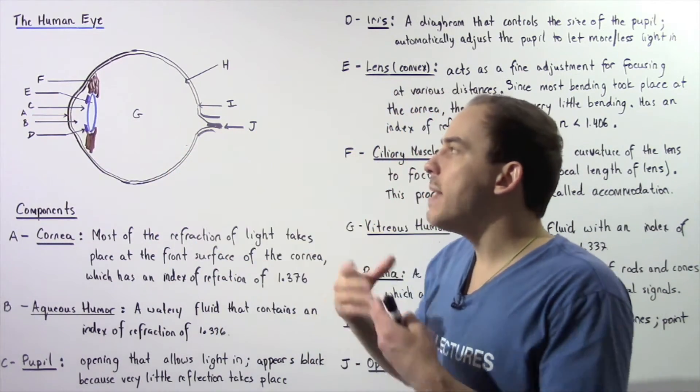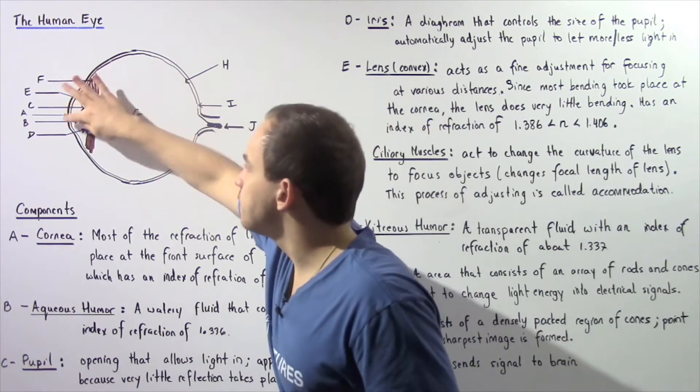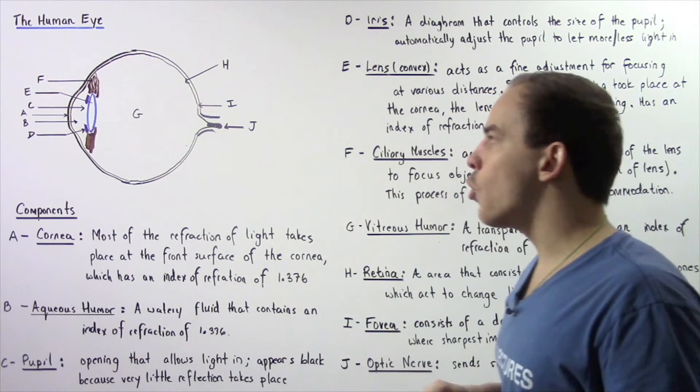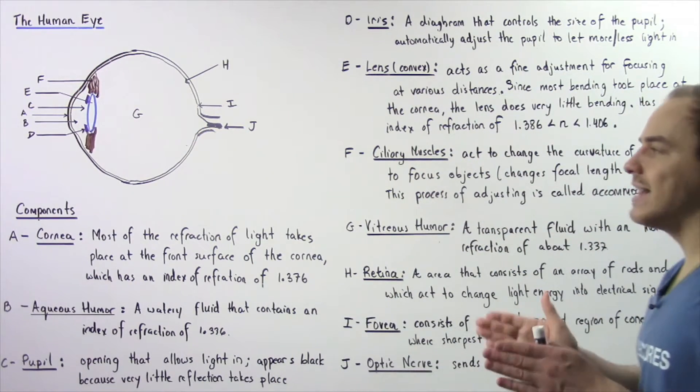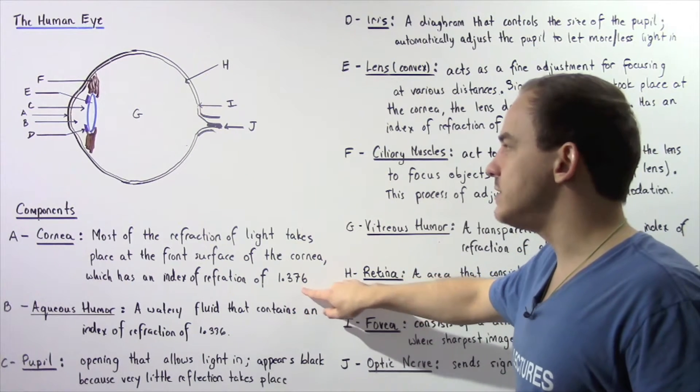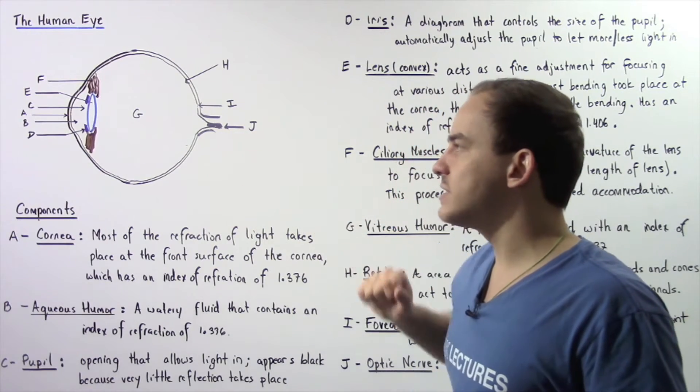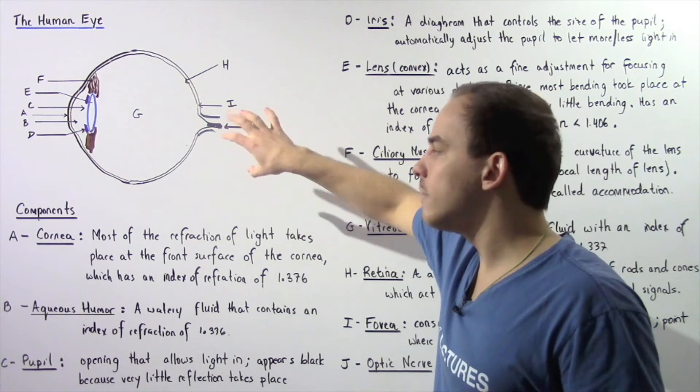Most of the bending or refraction of light actually takes place at the front surface of our cornea, and the cornea has an index of refraction of about 1.376 compared to 1.00, which is the index of refraction of air.